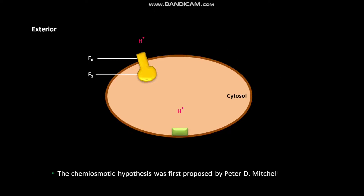The chemiosmotic hypothesis was first proposed by Peter Mitchell in 1961.